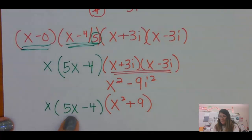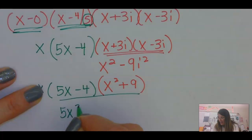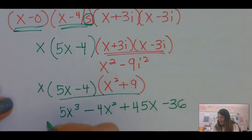So, don't forget that this guy had to come up to the front. Now, I'm going to FOIL out these guys. 5x cubed minus 4x squared plus 45x minus 36.